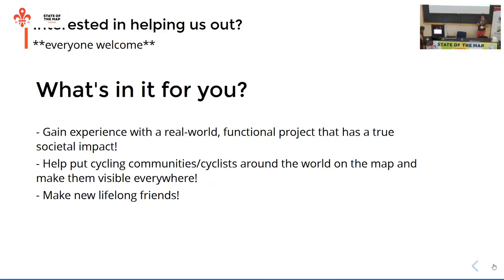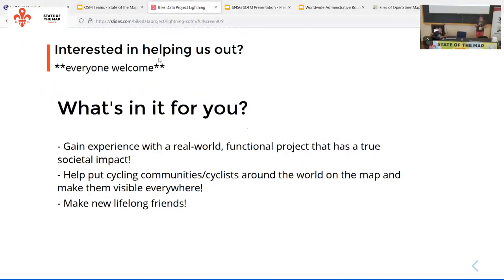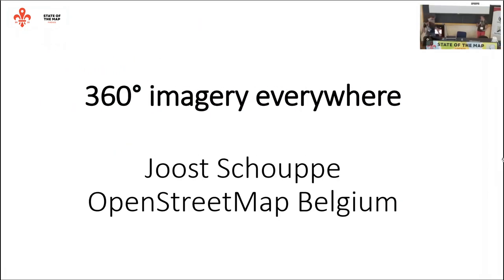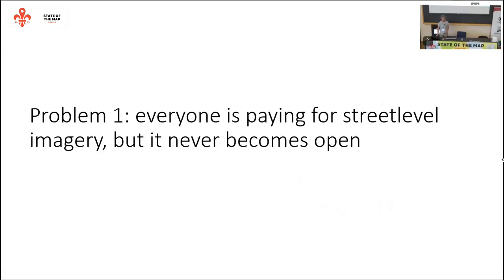The next talk is from Joost Schuppe from OSM Belgium about 360-degree imagery everywhere worldwide. I'm Joost, from OpenStreetMap Belgium — I'm not a graphic designer, as you will see in my slides. I'm here to talk about a very small project, so the lightning talk format is perfect. We're working on 360-degree imagery, trying to get coverage for the whole country eventually.